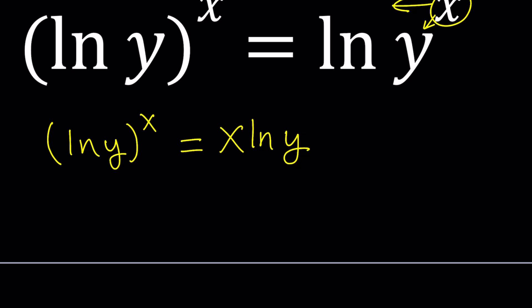But one thing we can do is, and think about this, we're trying to solve for y. So it will make sense if we have everything on the same side that contains y. So we're going to divide both sides by ln y.